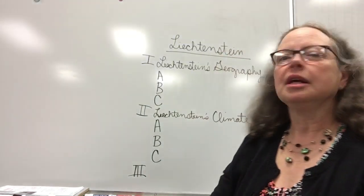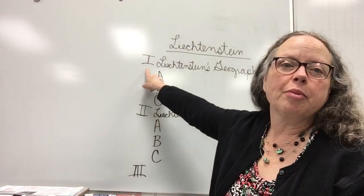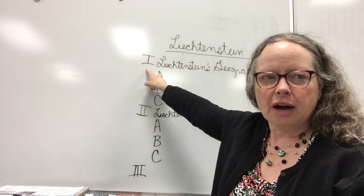On your outline at the top you're going to start with the title, the name of your country, then you're going to put a Roman numeral one right over here on the edge.